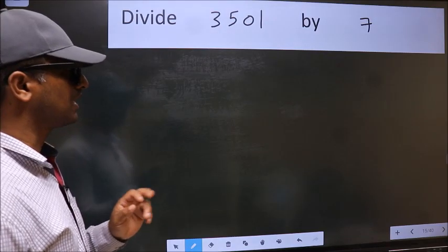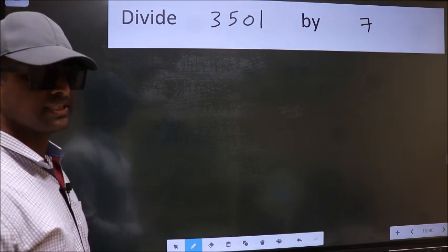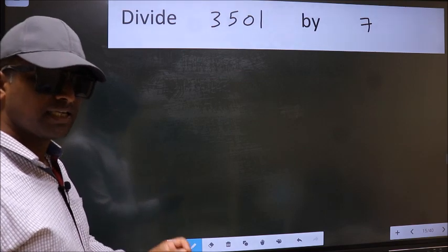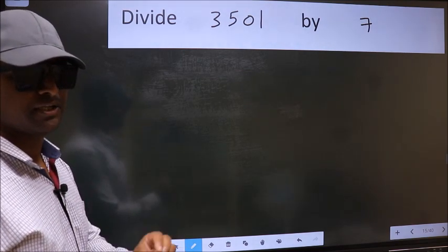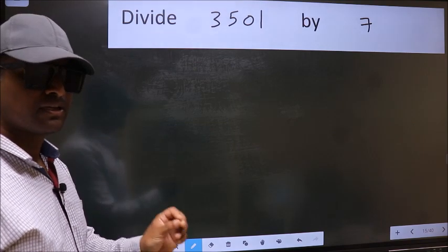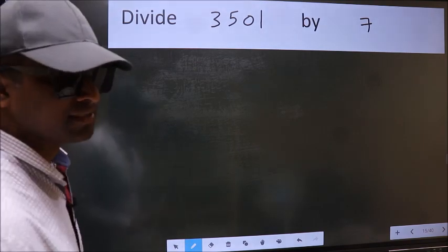Divide 3501 by 7. While doing this division, many make this mistake. What is the mistake that they make? I will let you know. But before that, we should frame it in this way.